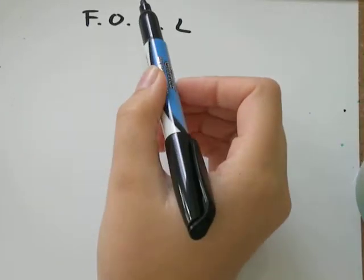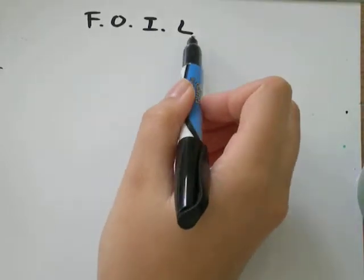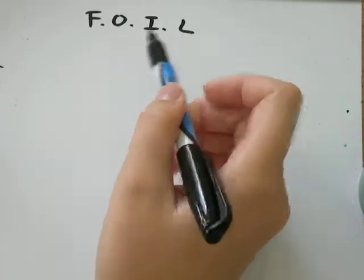The F stands for first, the O stands for outside, I stands for inside, and L stands for last. So when you see the word FOIL, think first, outside, inside, last.